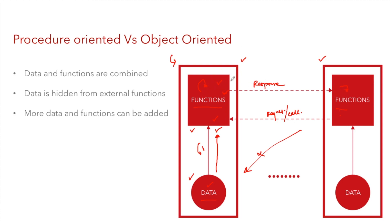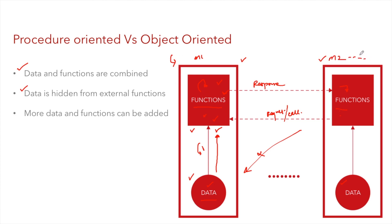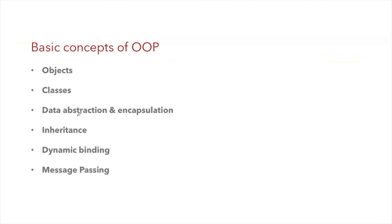As we've seen, data becomes more secure in object oriented programming — data and functions are combined and data is hidden from external functions. Another important point is that more data and functions can be added; like model 1, model 2, and subsequently any number of models can be added.